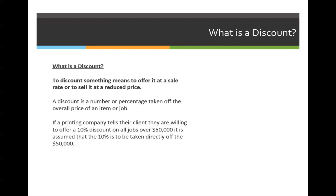First we need to identify what a discount is and how it differs from just doing percentages. To discount something means to offer it at a sale rate or to sell it at a reduced price. So if you go to a store and they have a sale, you're getting a discount on the original price. For example, if a printing company offers a 10% discount on all jobs priced over $50,000, that 10% is taken directly off the $50,000. You can rewrite this as: what is 10% of $50,000? That gives you the discounted amount, and you subtract it from the original value to get the discounted price.